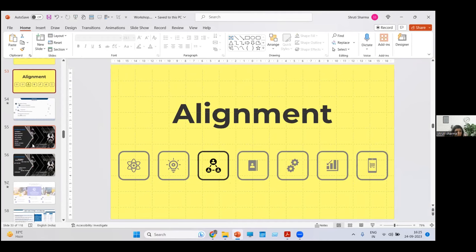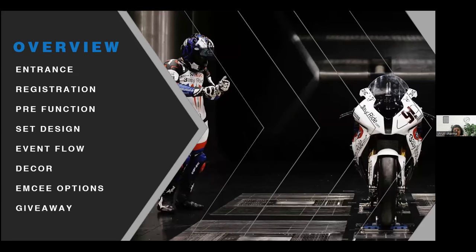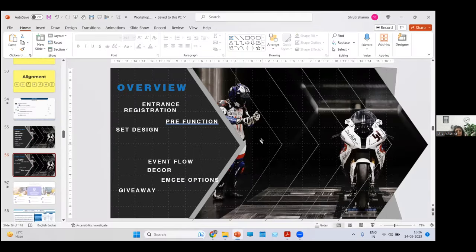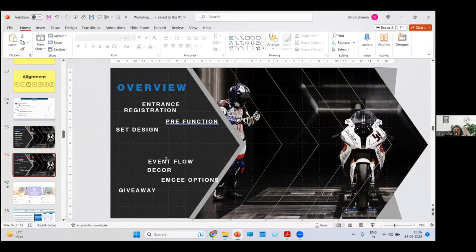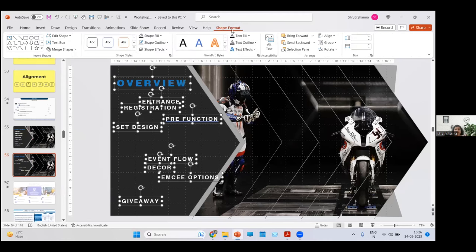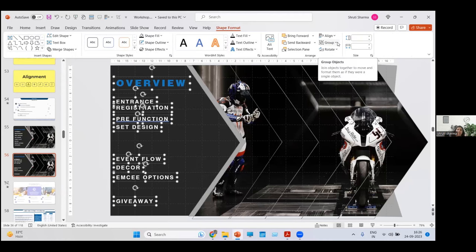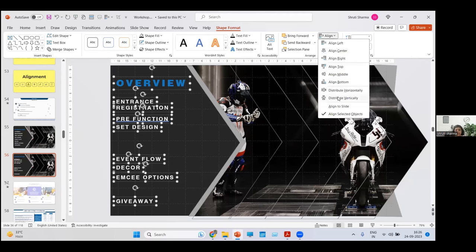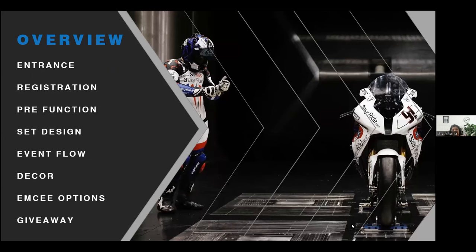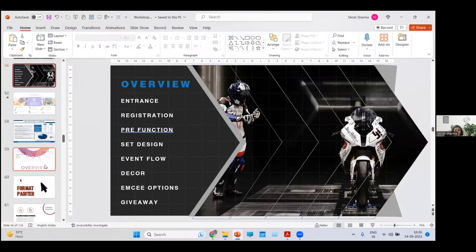That's how you can use the alignment tool to align anything practically. One more example: if you're writing text and it's haphazard, decide the topmost and bottommost location, select all, go to Shape Format, Align Left first, then Align and Distribute Vertically — and look how beautifully they are aligned. It's one of the most useful tools you'll use in practically every presentation.